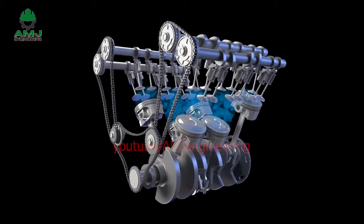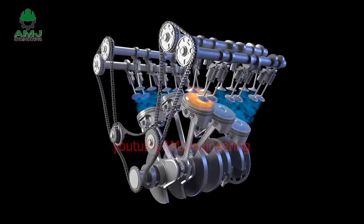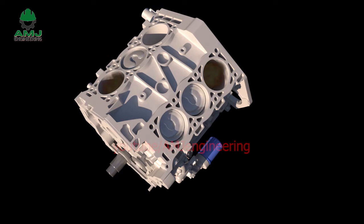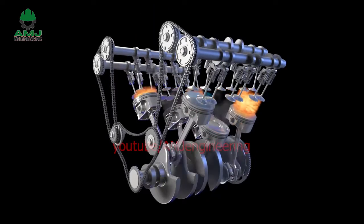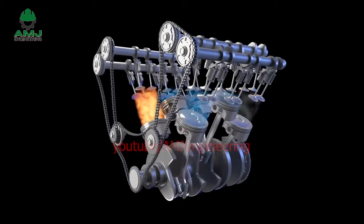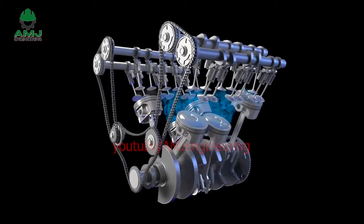The engine then partially converts the energy from the combustion to work. The engine consists of a fixed cylinder and a moving piston. The expanding combustion gases push the piston, which in turn rotates the crankshaft. Ultimately, through a system of gears in the powertrain, this motion drives the vehicle's wheels.